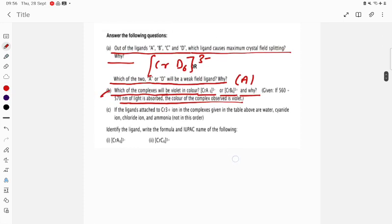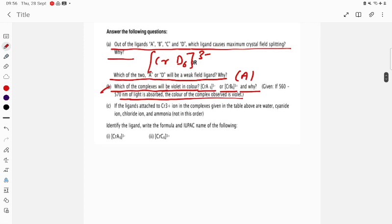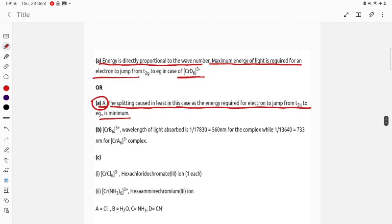So we need to know the data, the range of the color. Here you see student, [CrB6], wavelength of light absorbed. If you are dividing this one, 1 upon 17830, it is going to give 560 nanometer for the complex, while it is giving 17733 nanometer for the complex [CrA6].